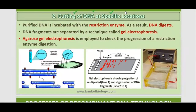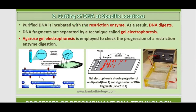Next is cutting of the DNA at a specific location. Purified DNA is incubated with the restriction enzyme, and as a result the DNA is digested. The DNA fragments are then separated by a technique called gel electrophoresis. Agarose gel electrophoresis is employed to check the progression of a restriction enzyme digestion — to verify that our DNA has been digested properly.